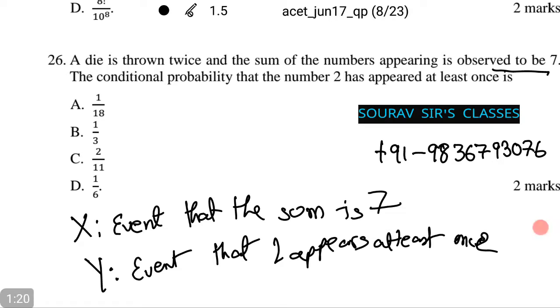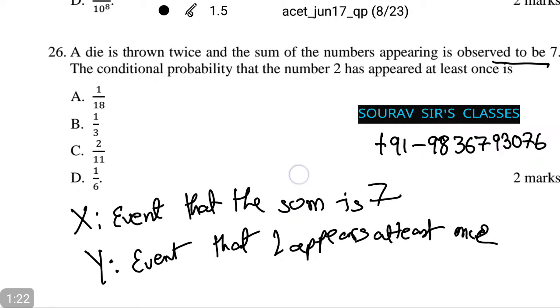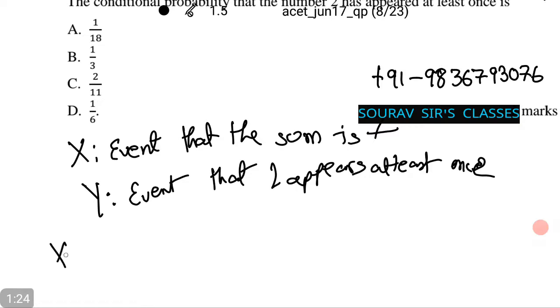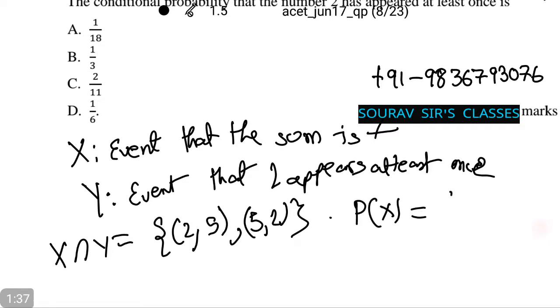Thus we need to find X intersection Y, that is (2,5) and (5,2). Therefore, probability of X equals 6/36 and probability of Y equals 11/36.